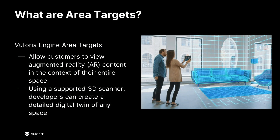Vuforia Engine Area Targets enable customers to recognize and track to an entire space, be it a factory or a museum, for a unique augmented reality experience. Using a supported commercial scanner or our Area Target Creator app on your device, developers can create detailed 3D models of a desired location. From this digital twin of your space, we can build an area target with Vuforia Area Target Generator, which can later be brought into Unity where you can create a fully interactive AR application.